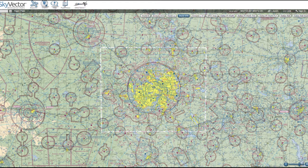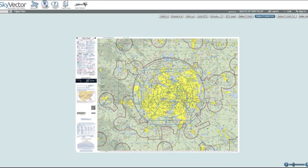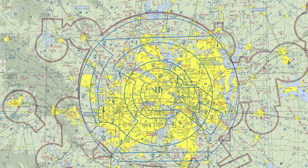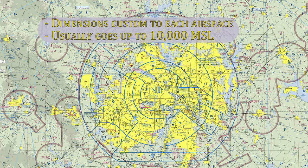On Skyvector you can select a TAC chart, which is basically a zoomed-in version of a Class Bravo airspace so you'll see the details a lot better. One thing you'll notice is that Class Bravo airspace is not standard — there aren't just two or three circles. It's kind of tailored to the specific airport and to the arrivals and departures at that airport.